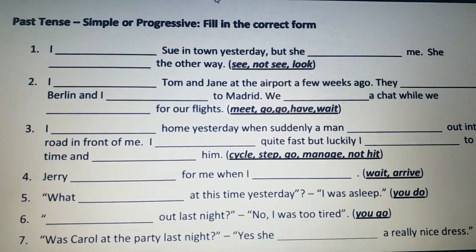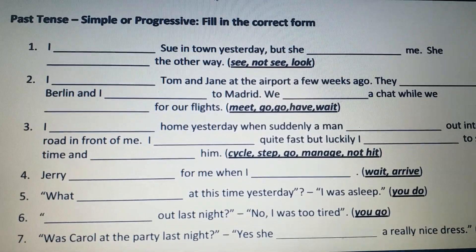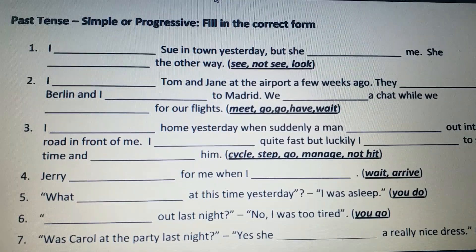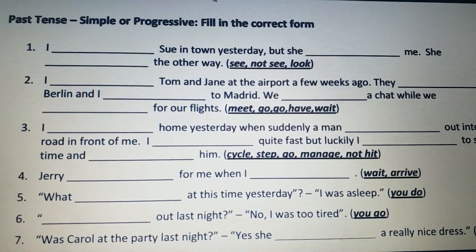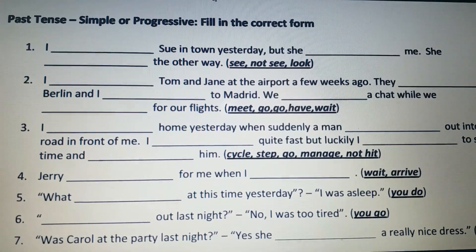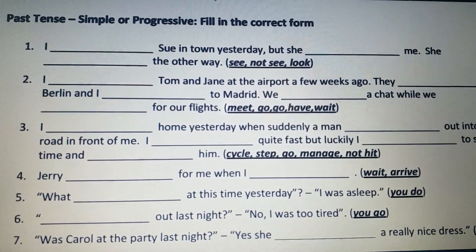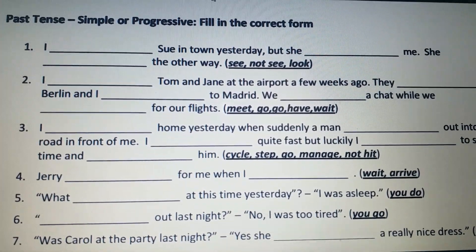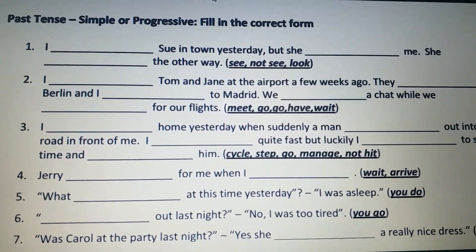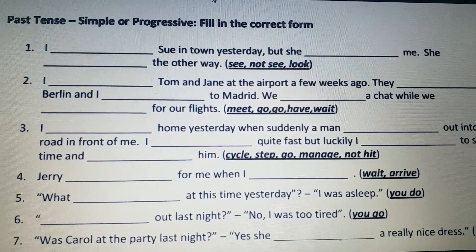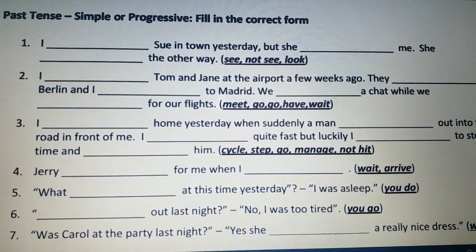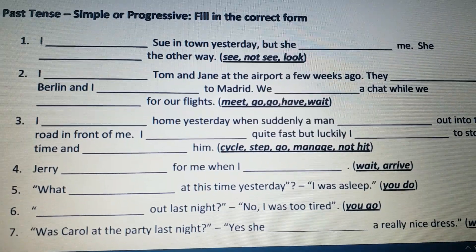Then: 'She ___ the other way.' The verb given in the bracket is 'look,' and since the action was happening in the past, we use past continuous tense: 'She was looking the other way.' So the full sentence is: 'I saw Sue in town yesterday, but she did not see me — she was looking the other way.' Here the ongoing past action takes past continuous tense.